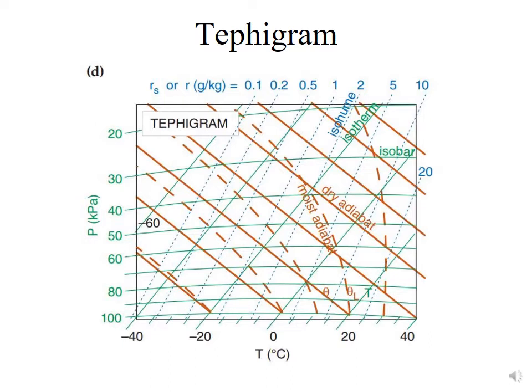In the Tephigram, the isotherms are straight and have a 45-degree inclination to the right, while isobars are horizontal and have a slight curve.